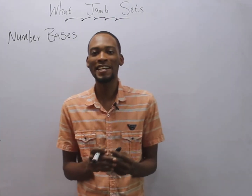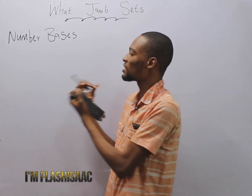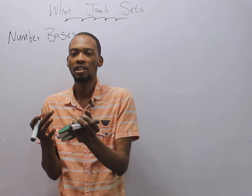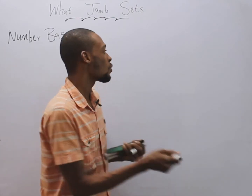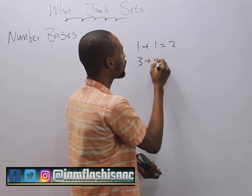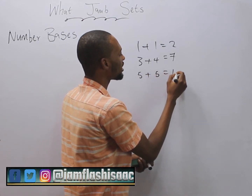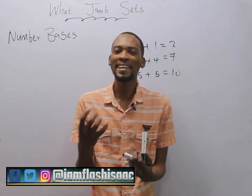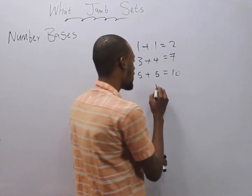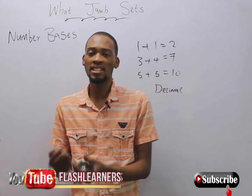Hello guys, I am Flash Isaac and today I'll be taking you through what number bases are in mathematics. We have different systems of counting. For example, one plus one equals two, three plus four equals seven, five plus five equals ten. This is because we count in base ten. The general way of counting that we know is base ten, or decimal. We have other number bases as well.